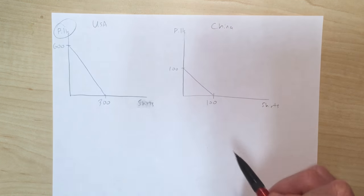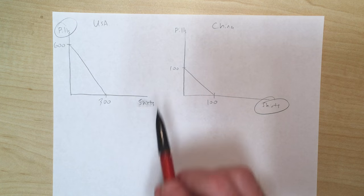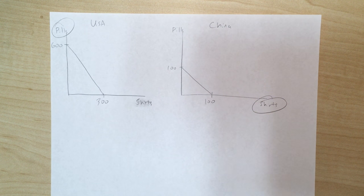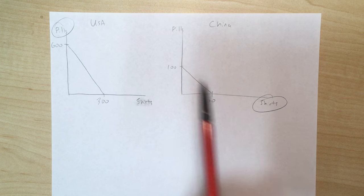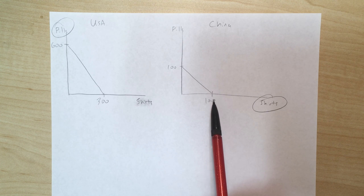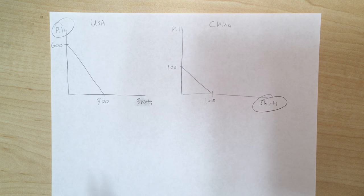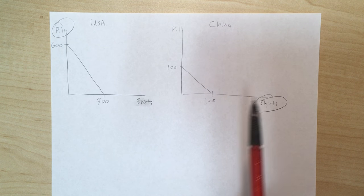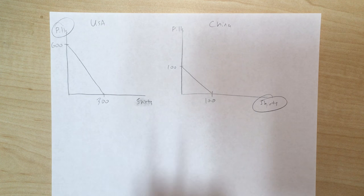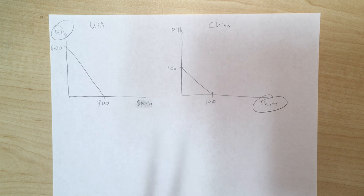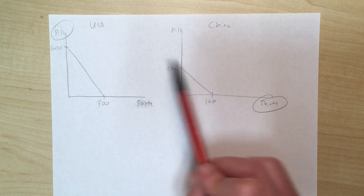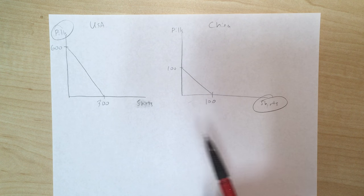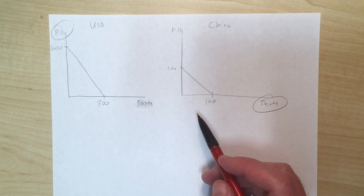This example is starting to look similar to the last one — even though the absolute advantages are different, the comparative advantages are solved in basically the same fashion. The US has the comparative advantage in pills and China has it for shirts, even though the US has the absolute advantage in both goods. What that means is the US is better at producing pills and shirts, but China is better at producing shirts relative to producing pills when compared to the US.